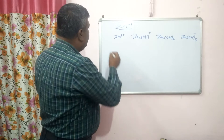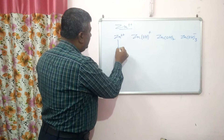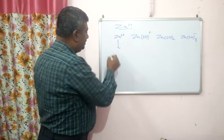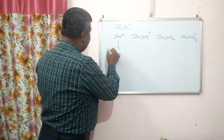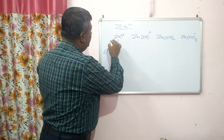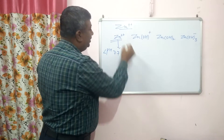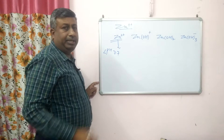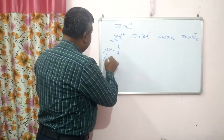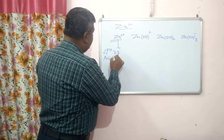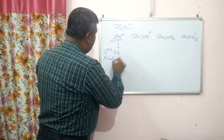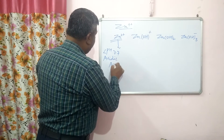At acidic pH — that is, when pH is less than 7.77 — the Zn²⁺ form predominates. Under acidic conditions, this form is present and this form is available to plants.